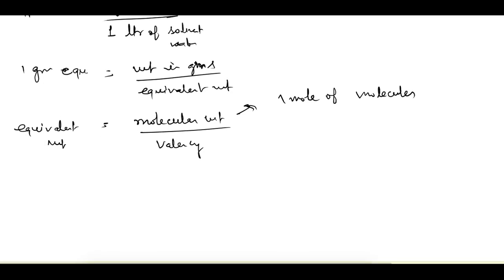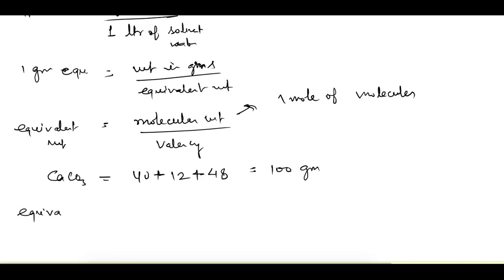For example, for CaCO₃, the molecular weight is the sum of the molecular weights of all elements: calcium is 40, carbon is 12, and three oxygens are 16×3 = 48, giving a total of 100 g/mol. The equivalent weight of CaCO₃ is molecular weight divided by valency: 100 divided by 2 (since we are talking about the ionic charge, which is 2) = 50 g.